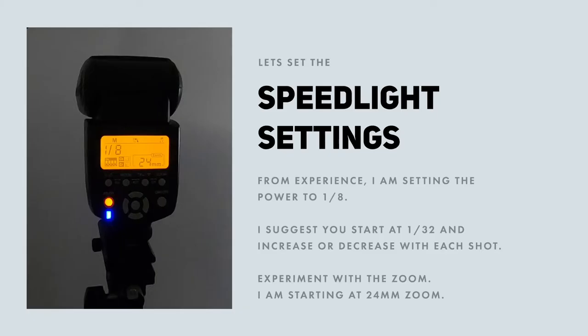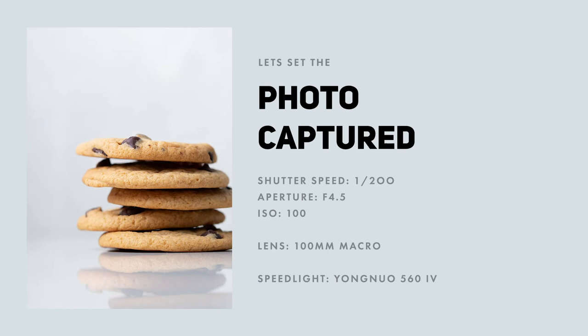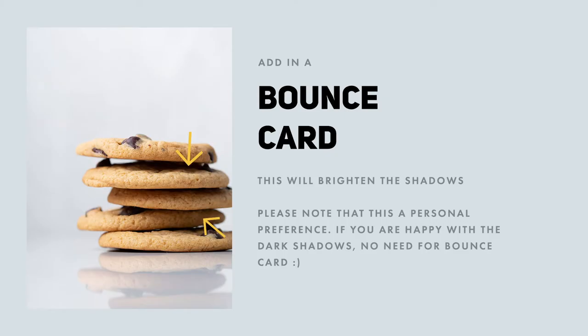I want to place the light high up so the light spills onto my cookies. I have my speed light power at 1 over 8. I'm using a 100mm macro lens. Camera settings are ISO 100, shutter speed at 200, and aperture at 4.5. Now let's take a shot. That's looking nice. However, I think this image may look better with a bounce card sitting on the opposite side of the light. This is to bounce light back into the image, which brightens up the shadows. A bounce card is essentially just a white piece of foam board — you can use white paper, anything white, even a white wall.